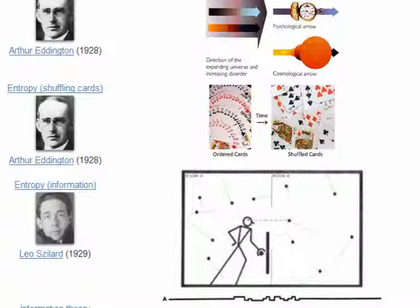In 1929, Leo Szilard introduced the information model of entropy, wherein Maxwell's demon required a certain amount of energy to measure the information of the particles between two different compartments.